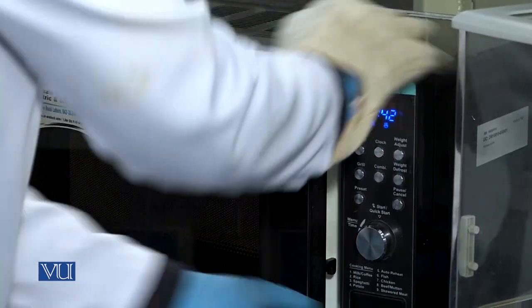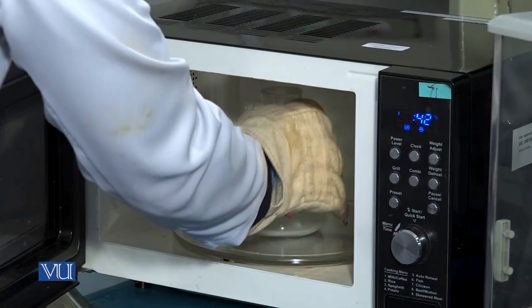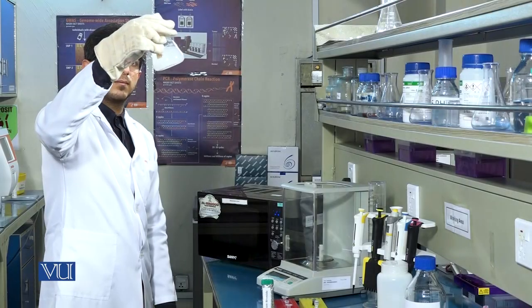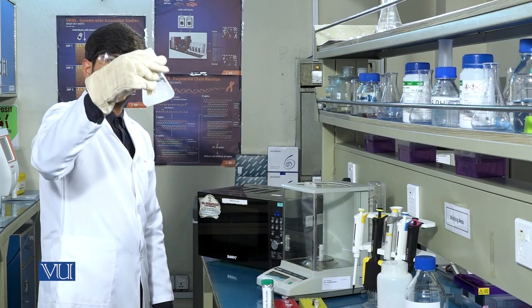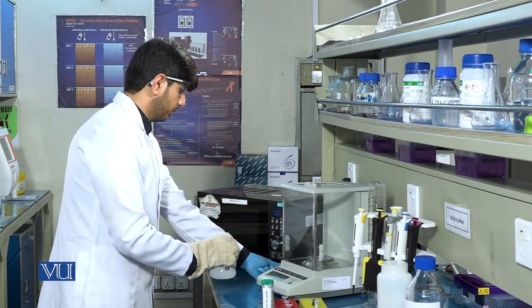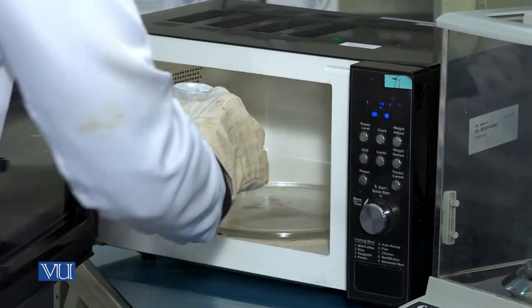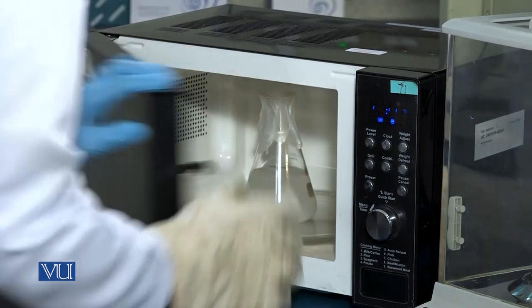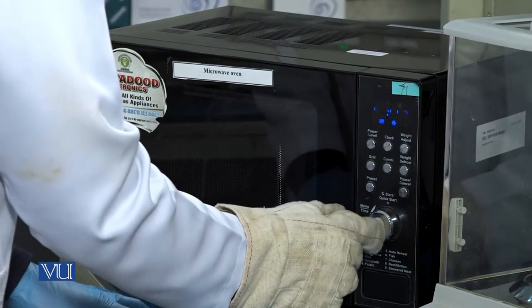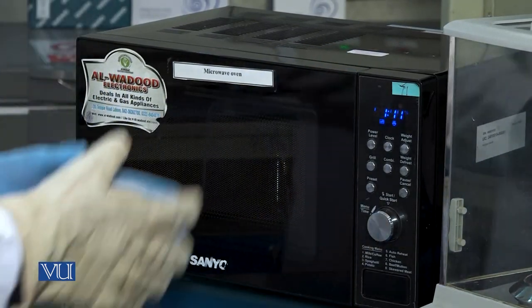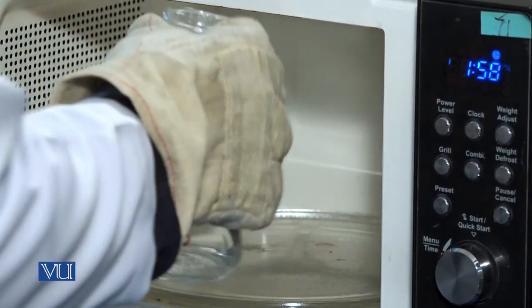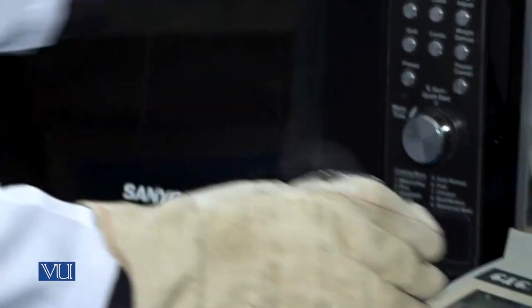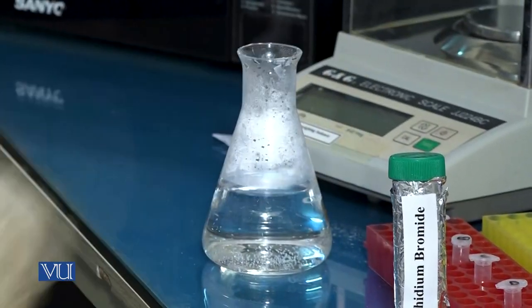After one minute, take out the flask with the help of heat-resistant glove and see whether contents have been dissolved or not. If contents are not dissolved, place the flask again in the oven until solution becomes clear. Let the flask cool for some extent.